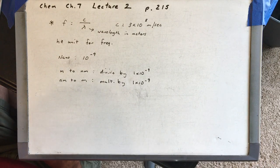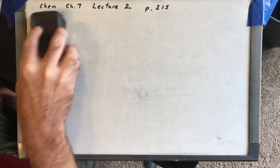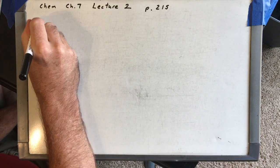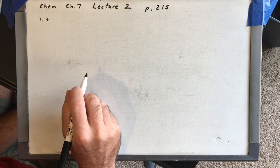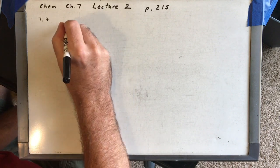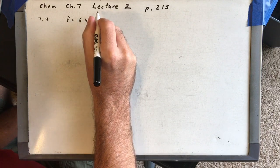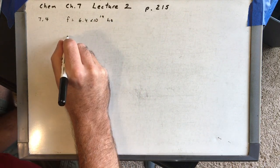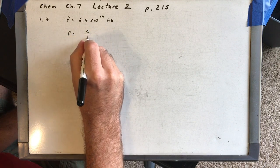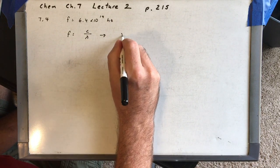Open your book to page 219 and let's do a couple of on-your-own problems. Problem 7.4 says: what color is light that has a frequency of 6.4 times 10 to the 14th hertz? So frequency is 6.4 times 10 to the 14 hertz. Frequency is equal to the speed of light over the wavelength. In order to get the color, our chart reads in wavelength, so let's solve for wavelength.